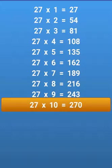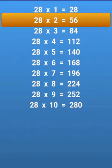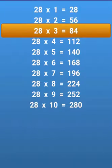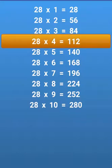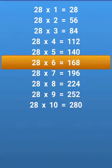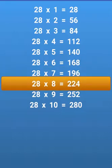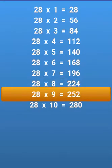27 times 10 equals 270, 28 times 1 equals 28, 28 times 2 equals 56, 28 times 3 equals 84, 28 times 4 equals 112, 28 times 5 equals 140, 28 times 6 equals 168, 28 times 7 equals 196, 28 times 8 equals 224, 28 times 9 equals 252.